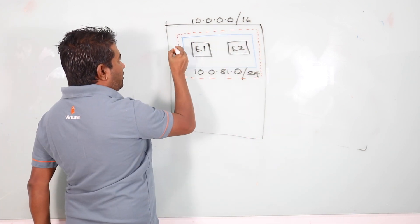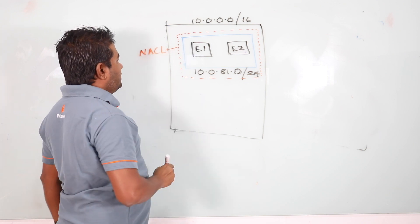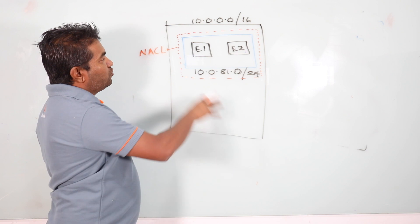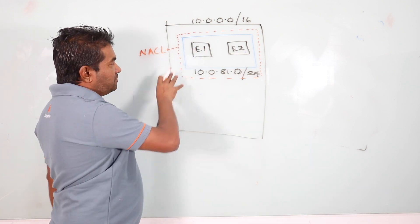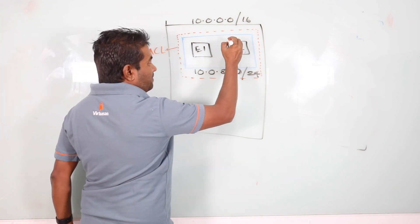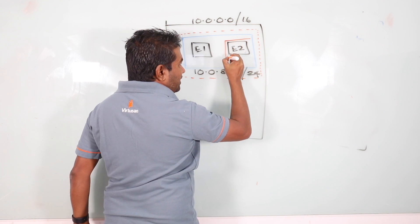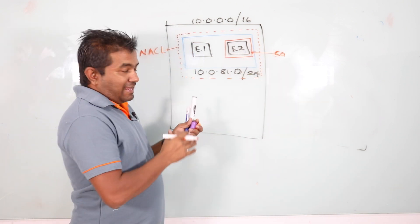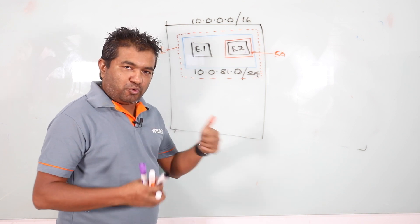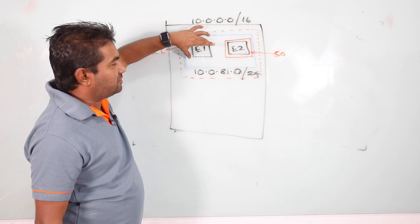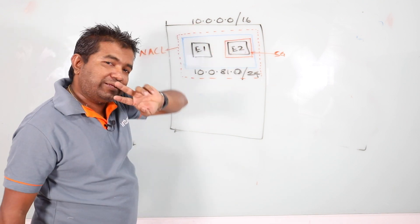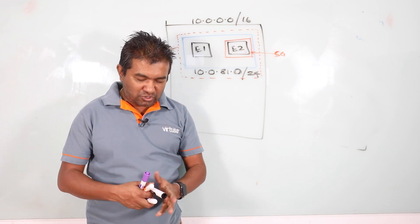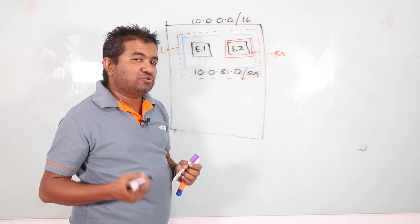This subnet has something called a NACL — Network Access Control List. What the NACL does is control who can access this subnet and what ports are available. Apart from the NACL, each instance is also protected by something called a Security Group. So if you want to control which ports and source IP addresses can access your instance, it is protected by two layers: one is the NACL and one is the Security Group.